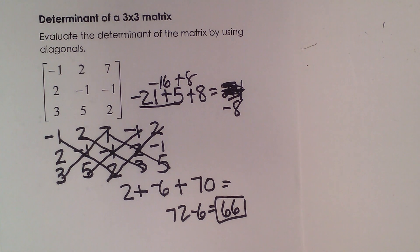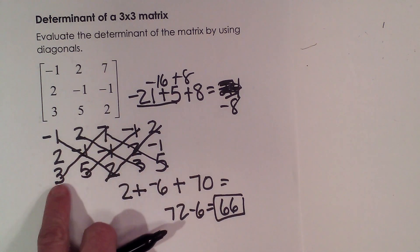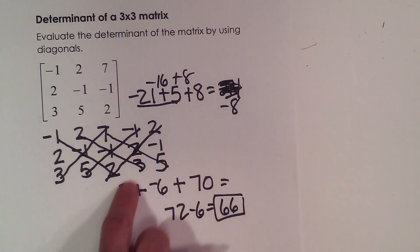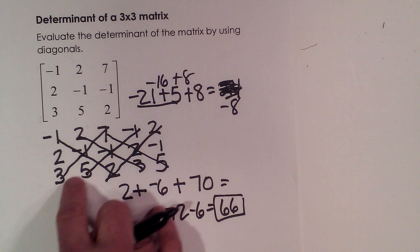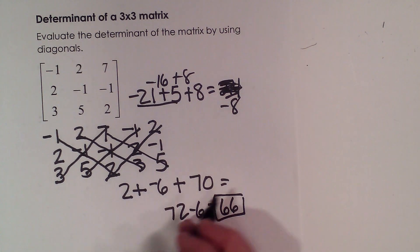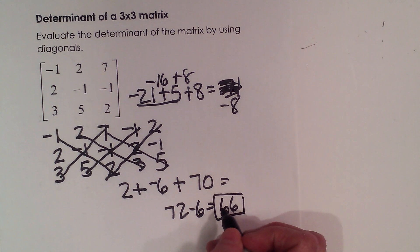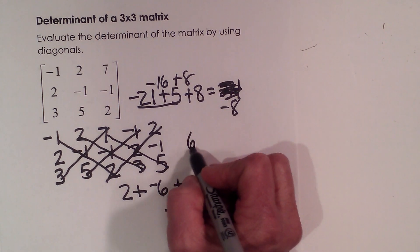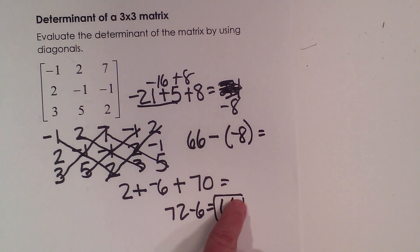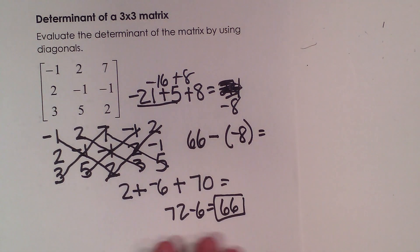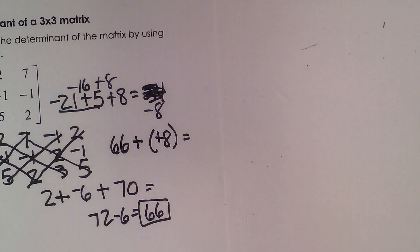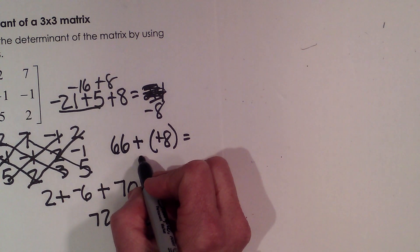Let's make sure we can add correctly. Okay, now once I get the product of the diagonals at the bottom and the sum of those three, and then I take the product of these diagonals and get the sum of those three, I then take the bottom and I subtract the top. So I've got 66 minus negative 8. So I take bottom minus top to get the final answer. And 66 minus negative 8 actually means I'm going to add. So this is going to add to 74.